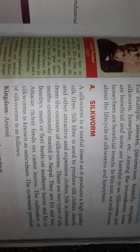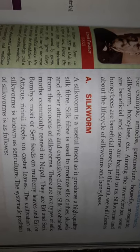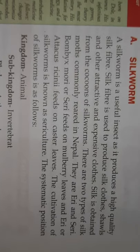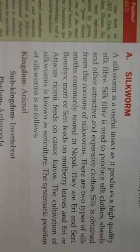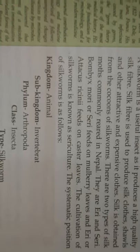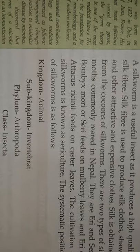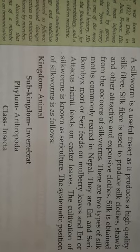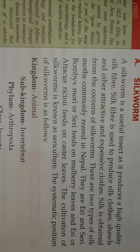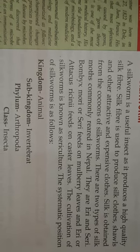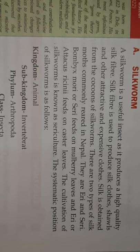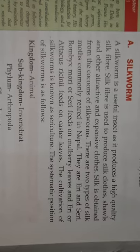First we will study the life cycle of silkworm, then honeybee. Silkworm is a useful insect and it produces high quality silk fiber. There are two types of silkworm reared in Nepal: Eri and Seri. Seri worm is also known as Bombyx mori (B-O-M-B-Y-X M-O-R-I). Eri silkworm's scientific name is Attacus ricini. Seri feeds on mulberry leaves, while Attacus ricini feeds on castor leaves.